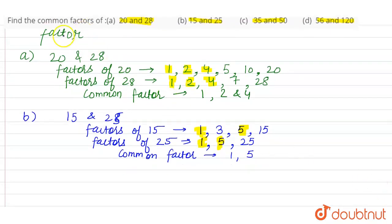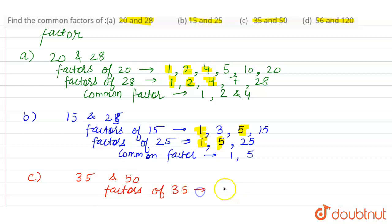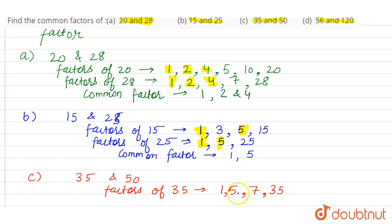In part (c), we have to find the common factors of 35 and 50. Factors of 35: 1 × 35 = 35. It is not divisible by 2, 3, or 4. Then 5 × 7 = 35, then 7. So factors of 35 are 1, 5, 7, and 35. We stop at 7 because 5 × 7 and 7 × 5 start repeating.